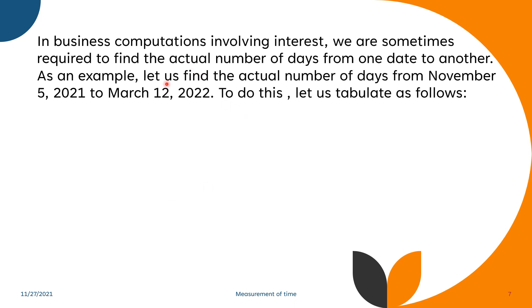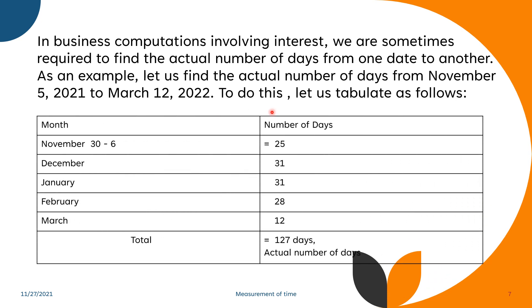In business computations involving interest, we are sometimes required to find the actual number of days from one date to another. As an example, let us find the actual number of days from November 5, 2021 to March 12, 2022. To do this, let us tabulate as follows. Since we started at November 5, so that's 30 minus 6 is equal to 25. December has 31 days, January is 31 days, February is 28 days, and March 12, since March up to March 12, so that's 12 days. So we add this, we have 127 days. So the actual number of days is 127 days.